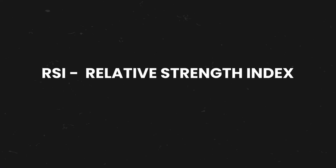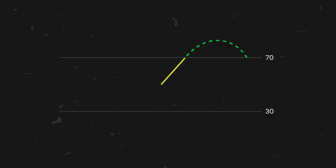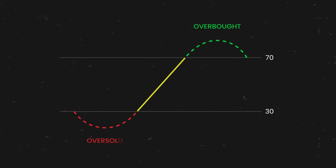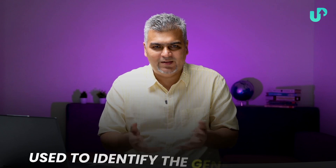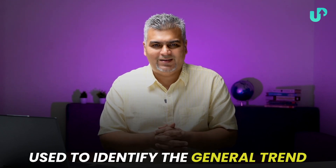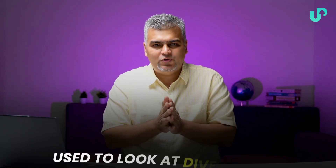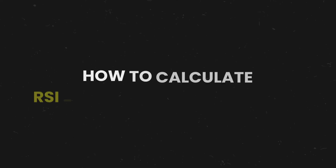The next topic is Relative Strength Index — a complete beginner's guide. This is an indicator created by J. Welles Wilder. It oscillates between 0 to 100. A reading above 70 is considered overbought, a reading below 30 is considered oversold. It is also used for identifying the trend or strength of the trend, and to look at divergences.